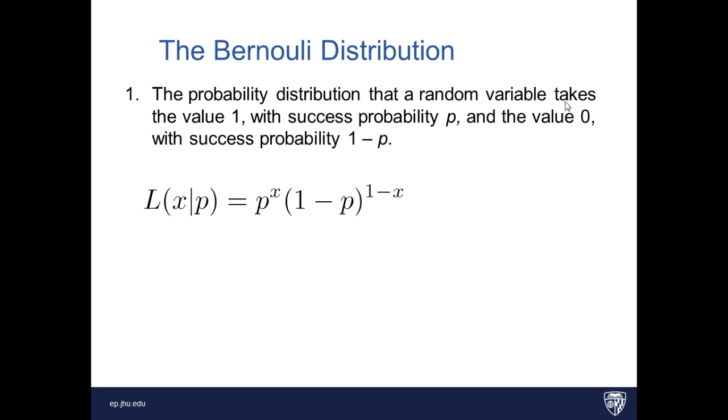So what does that distribution look like? Well, I've drawn it out here for you. So the likelihood of observing x, given a parameter, or probability of success p, is going to be equal to this distribution here. Let's see what this looks like.